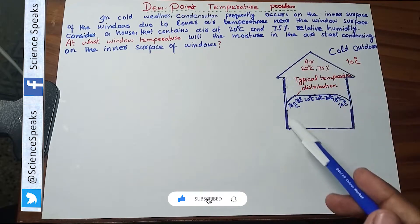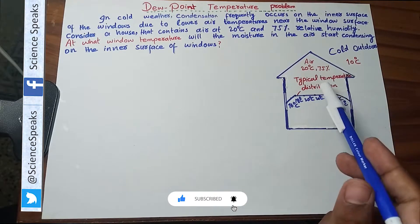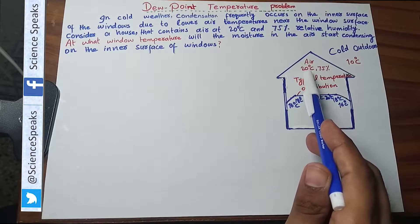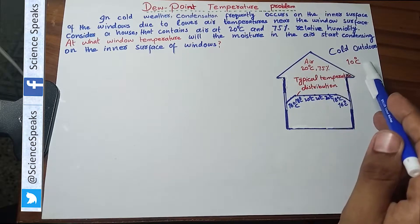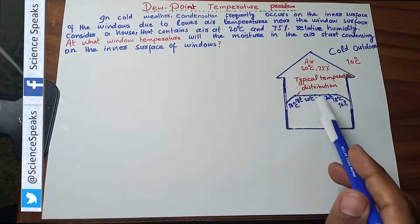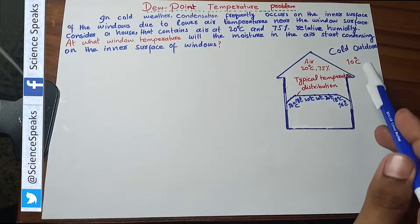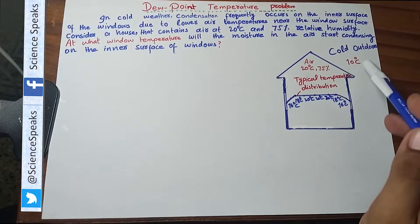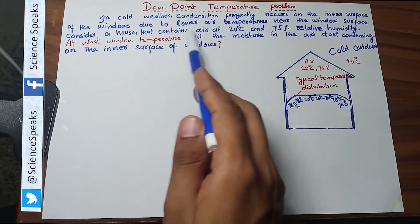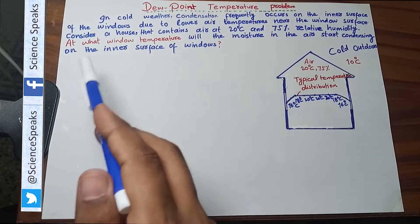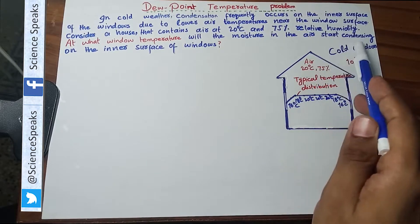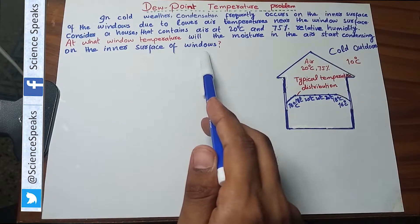Same is the situation here. We are considering house air in which we have a relative humidity 75 percent and temperature 20 degree centigrade. At the same time outer temperature is 10 degree centigrade. So the heat transfer will take place between the house and the outdoor atmosphere and it will be prominent near the windows. So here I have been given these conditions and I am asked at what window temperature will the moisture in the air start condensing on the inner surface of the windows.